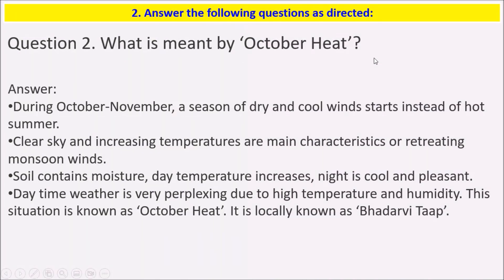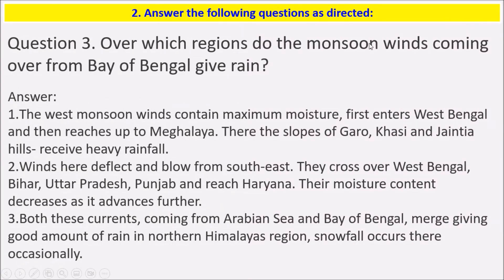What is meant by October heat? During October–November, a season of dry and cold wind starts. Instead of hot summer, clear sky and increasing temperatures are the main characteristics of retreating monsoon winds. The air contains moisture and daytime temperature increases; the night is cool and pleasant. The daytime weather is very oppressive due to the high temperature and humidity.